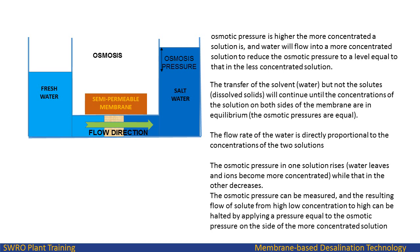As the osmotic pressure in one solution rises, water leaves and ions become more concentrated, while that in the other decreases. The osmotic pressure can be measured, and the resulting flow of water from high concentration to low can be halted by applying a pressure equal to the osmotic pressure on the side of the more concentrated solution.